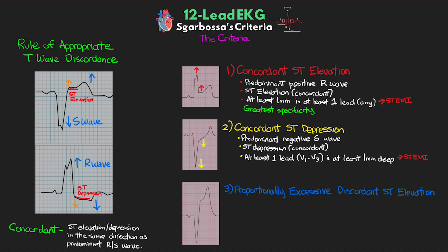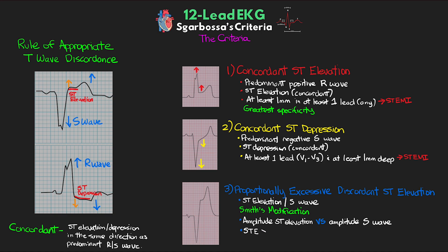For our last criterion, we need to evaluate the proportionality of the size of the ST elevation when compared to the amplitude of the negative S-wave. This third criterion is actually the one that Smith modified from the original Sgarbossa's Criteria, which previously didn't compare the size of the S-wave and the ST elevation — it just looked for a fixed size of ST elevation. What we want to do is measure the amplitude of the ST elevation and compare it to the amplitude of the negative S-wave. If the ST elevation is greater than or equal to 25% of the depth of the S-wave and this is present in at least one lead anywhere on the EKG, that is also an indicator of STEMI. If any of these three criteria are present, we conclude the patient is having a STEMI and treat it accordingly — cath lab activation, etc.